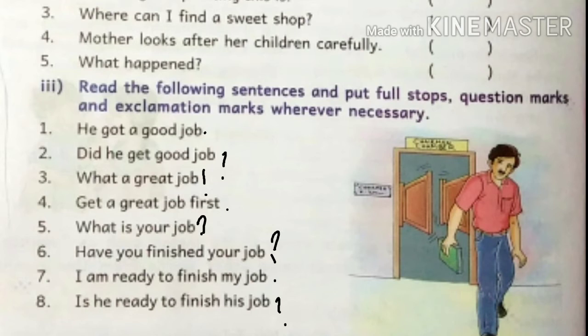Number four: 'Get a great job first.' — full stop; order, imperative sentence. Number five: 'What is your job?' — question mark; interrogative sentence. Number six: 'Have you finished your job?' — question mark; interrogative sentence. Number seven: 'I am ready to finish my job.' — full stop; declarative sentence. Number eight: 'Is he ready to finish his job?' — question mark; interrogative sentence.